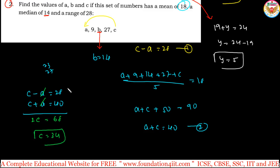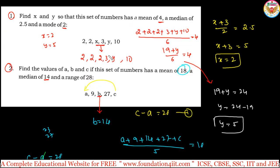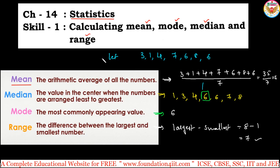Now that we know c = 34, substitute back: 34 minus a = 28, so a = 34 minus 28, which gives a = 6. So a = 6, b = 14, c = 34. Based on the properties of mean, median, mode, and range, we can solve these types of problems. More similar questions are available in the worksheet link in the description below for practice.